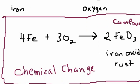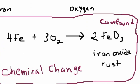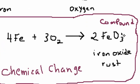Here we have four molecules of iron combined with three molecules of oxygen, and what's going to happen is that you form a compound called iron oxide, which is the same thing as rust.